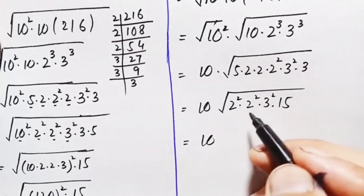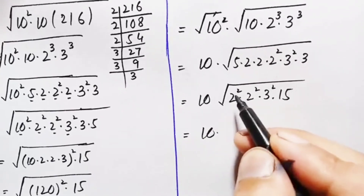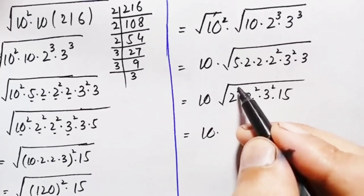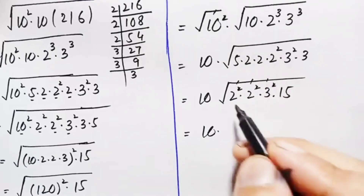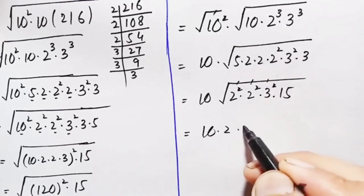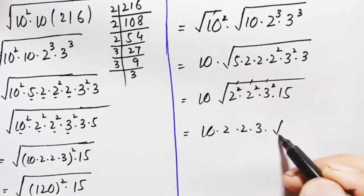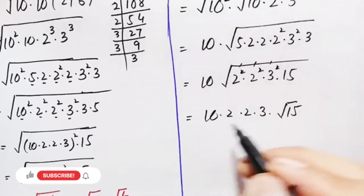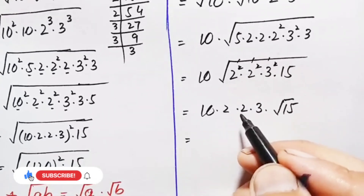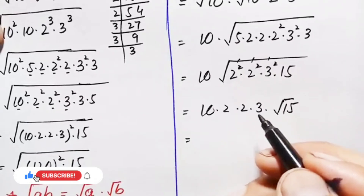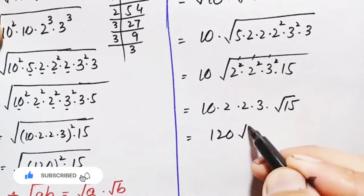We split the square root over all these factors. The square root cancels with each perfect square: √(2²)=2, √(2²)=2, √(3²)=3, leaving √15 under the root. Multiplying: 10×2×2×3 = 120. So the final answer using the second method is also 120 times √15.